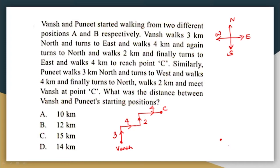Now let us try to see in which direction Puneet has walked. Based on the given information, Puneet is initially walking 3 km north. I don't know which is his starting point, so I am just assuming that Puneet's starting point is here. I am just writing down the given information and drawing the figure assuming Puneet is starting from this point. He is walking 3 km north.